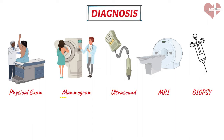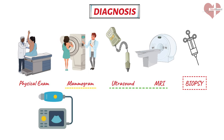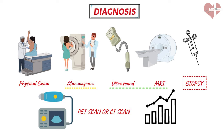A mammogram is often used as a screening tool for breast cancer and can detect tumors that may not be noticeable during a physical exam. An ultrasound and MRI may also be used to get a more detailed picture of any abnormalities in the breast tissue. If an abnormality is detected through screening tests, a biopsy may be necessary to confirm the presence of cancerous cells. Additionally, further testing such as a PET scan or CT scan may be necessary to determine the stage of the cancer and whether it has spread. Early detection through regular screening tests can greatly increase the chances of successful treatment and survival, so it is important for women to discuss their screening options with a healthcare provider.